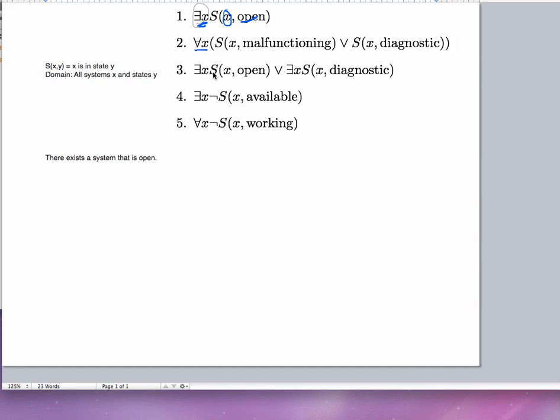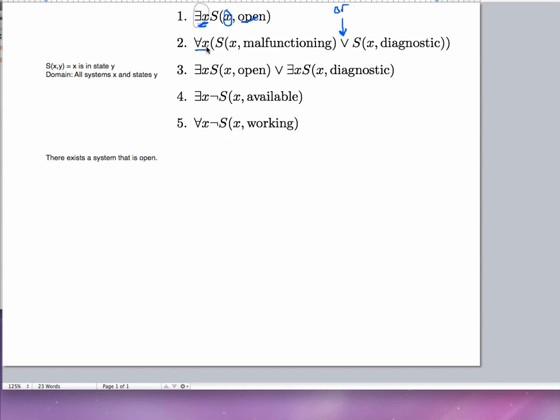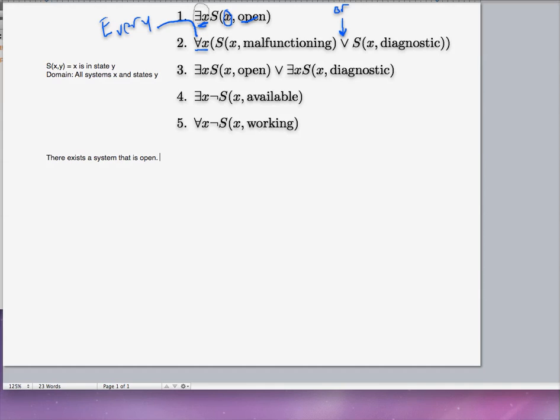Now with that, let's move on to the second one. This is a universal quantifier. For all systems x, S(x, malfunctioning) is true or S(x, diagnostic) is true. So one way we can translate the for all x is just merely to say every. Now that is one acceptable translation of for all.